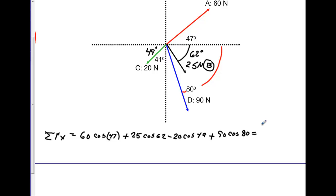We'll get our calculator. We'll run those very quickly. We got 60 times the cosine of 47. That gives me 40.92. We're going to go ahead and add that to 25 times the cosine of 62. That gives me a sum right now of 52.66. We're going to subtract 20 times the cosine of 49. That gives me a value of 39.54. And then we're going to add 90 times the cosine of 80. And that gives me a value of 55.16. So we'll go ahead and write that. 55.16.